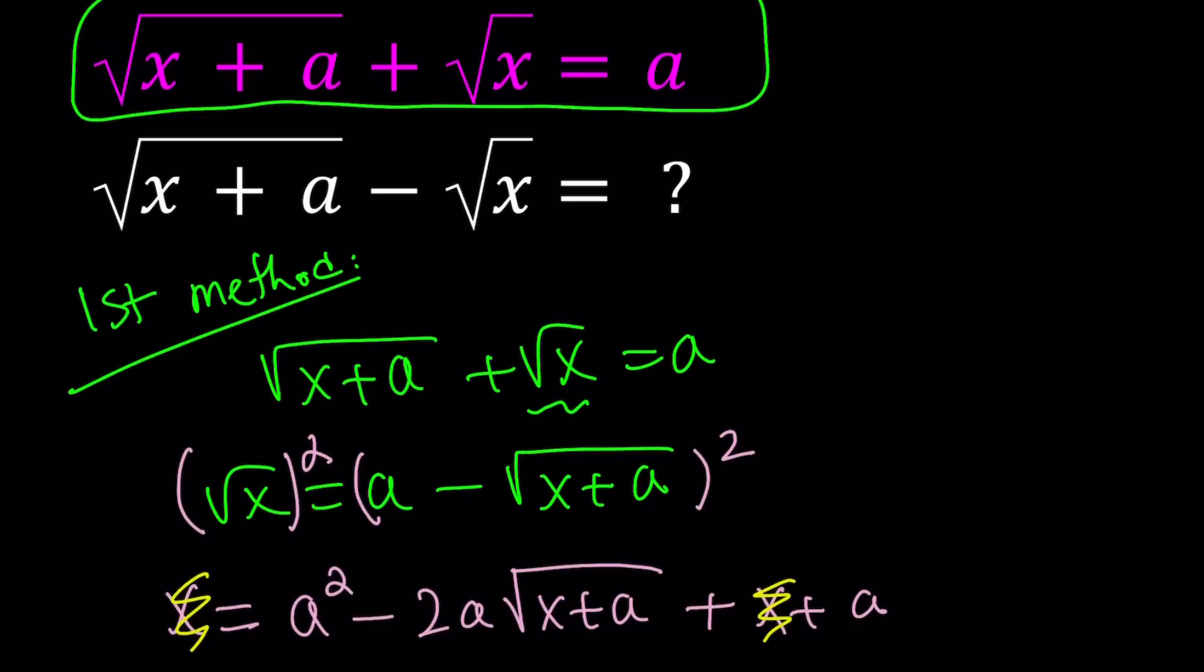Now notice that if a is equal to 0, look at the original problem. If a is 0, you get square root of x plus square root of x is equal to 0. This just implies x is 0. So for a equals 0, x is 0.